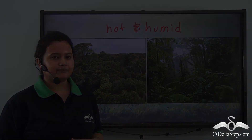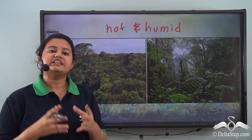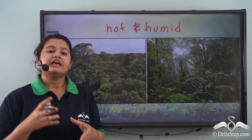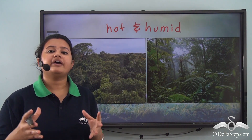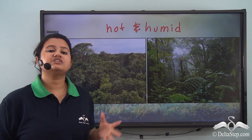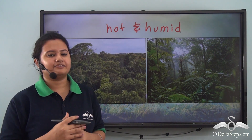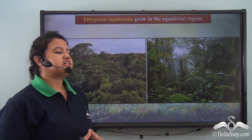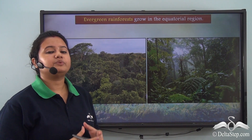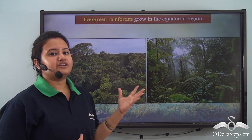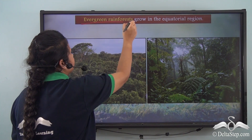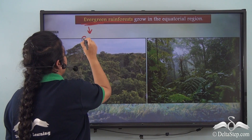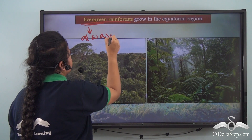The trees found in these rainforests never shed their leaves all at once. This means that the trees are never bare-headed, and therefore they always appear to be green in color. As a result, these rainforests are also known as evergreen rainforests, where evergreen means always green.